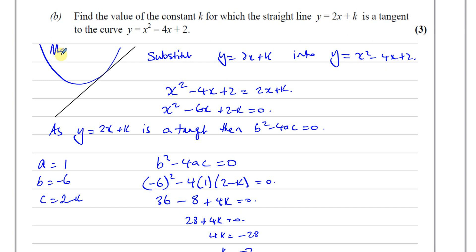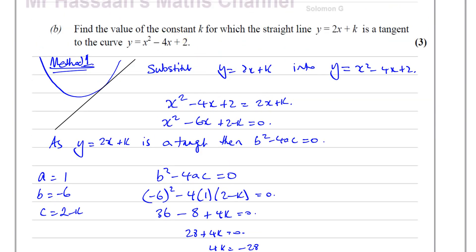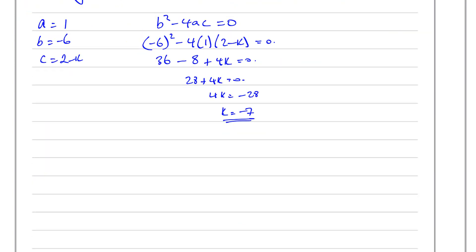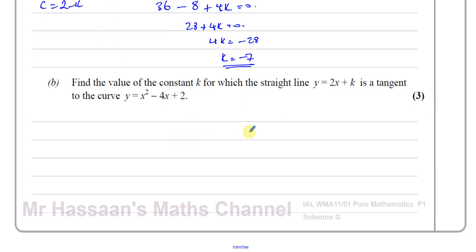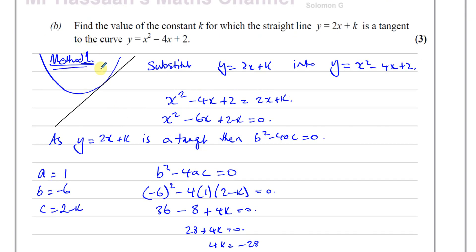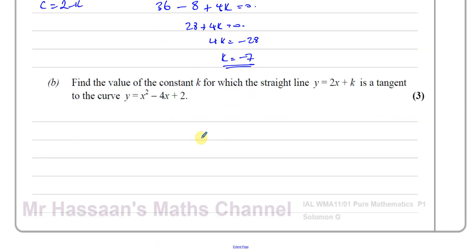Another way of solving it uses differentiation. By the time we've finished chapter 3 we wouldn't have learned this second method yet, but by the time we've finished P1 and covered chapter 8, we would know it. For those who haven't done differentiation yet, method 1 is the way to go. Those who have completed chapter 8 should understand what I'm about to explain.